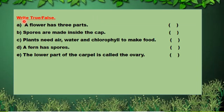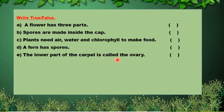Now students we will do true or false. Number A: a flower has three parts — is it right or wrong? It is wrong, because a flower has four parts. Number B: spores are made inside the cap — it is right, because mushrooms have caps and they have spores inside their caps. Plants need air, water and chlorophyll to make food — it is also true. A fern has spores — true. The lower part of the carpel is called the ovary — it is also right.